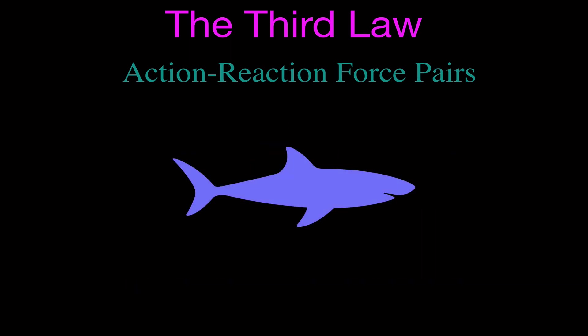We have a shark swimming in the ocean, moving its tail back and forth. We have the force on the tail from the water — the water is applying a force to the tail. When that happens, there's a force on the water from the tail of the shark. T for tail, W for water. You can see there are opposite objects — one object is the tail, the other object is the water molecules.